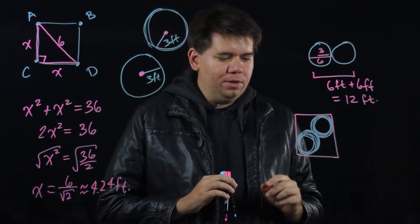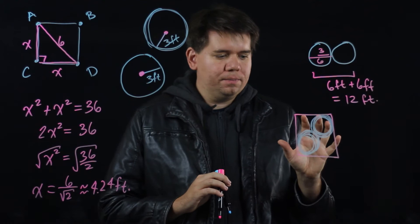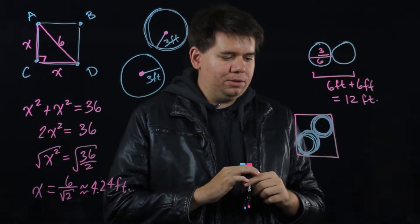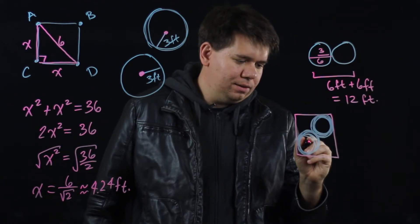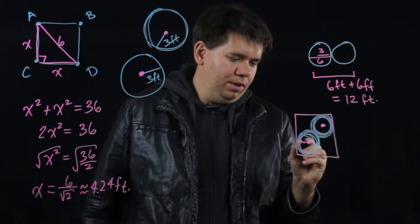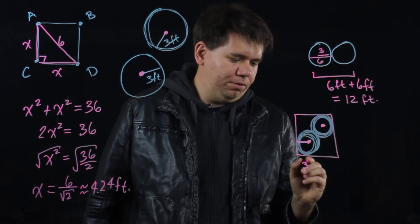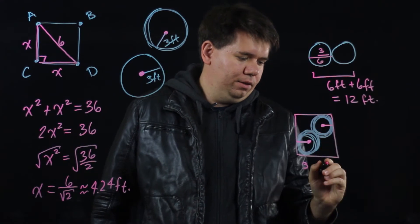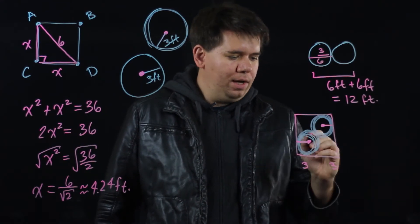And then what I can do is I can calculate how large this classroom needs to be. Well let's think about it. Here's the center of this circle, here's the center of this circle. It is true that coming over I have a distance of 3, and coming over here I have a distance of 3.